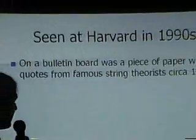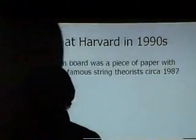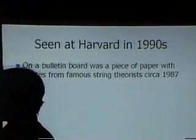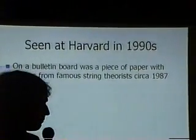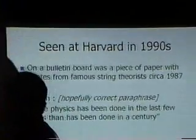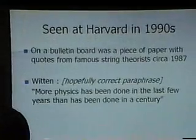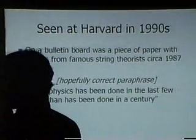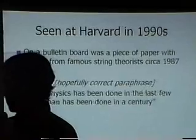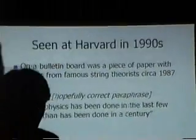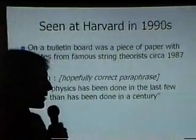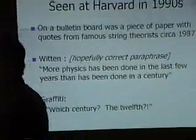In the 1990s, probably 1990 or 1991, I was wandering around Harvard, and on a bulletin board there was a piece of paper with some quotes from famous string theorists made around 1985. Here's one from Witten: 'More physics has been done in the last few years than has been done in a century.' I think this is about right — I couldn't find the exact quote, and I'm sure he doesn't like to remember this one. But somebody had written a little bit of graffiti underneath: 'Which century? The 12th?'